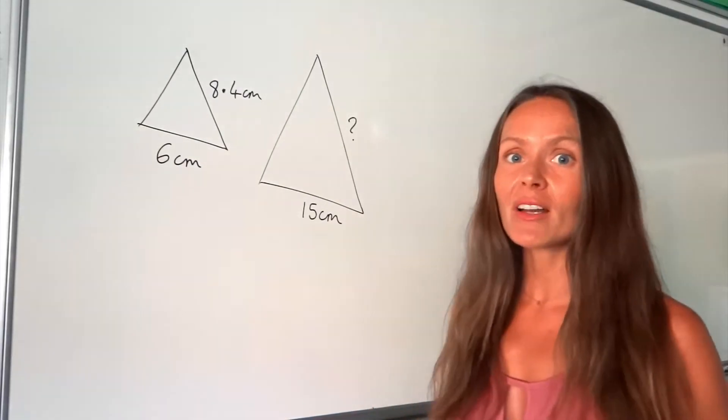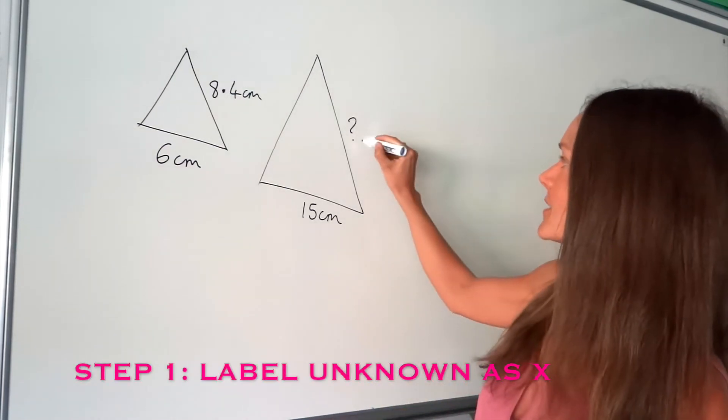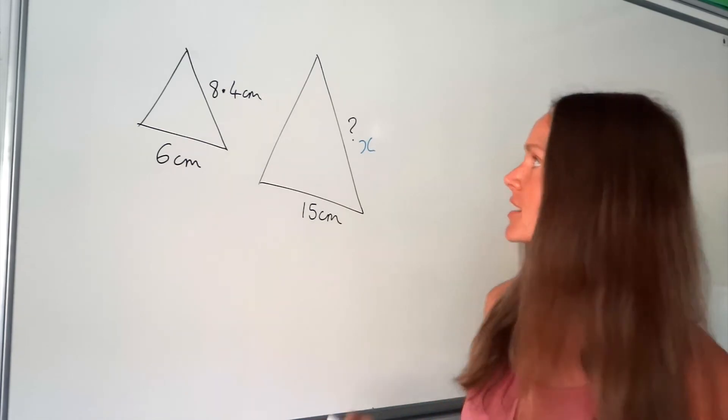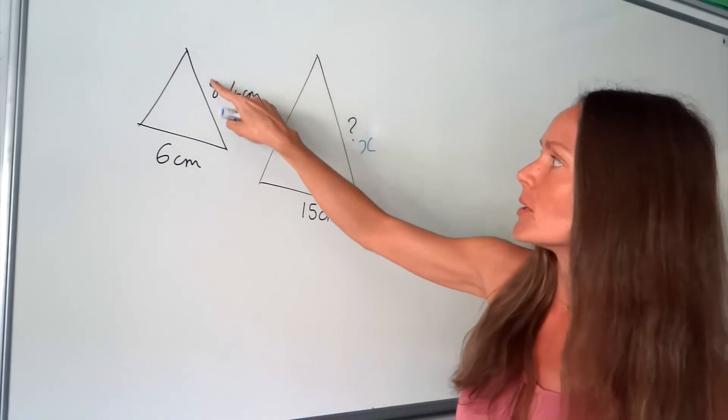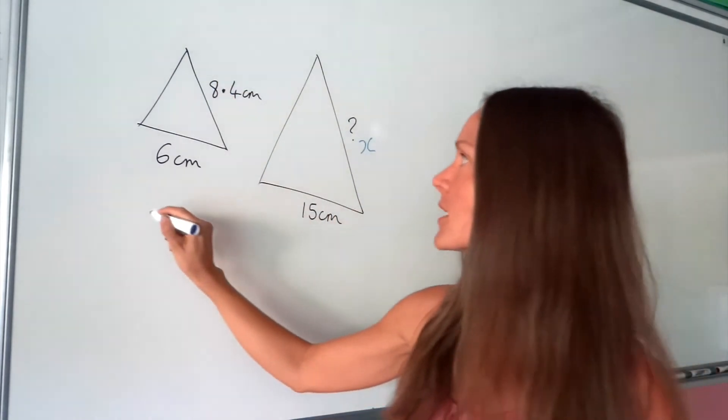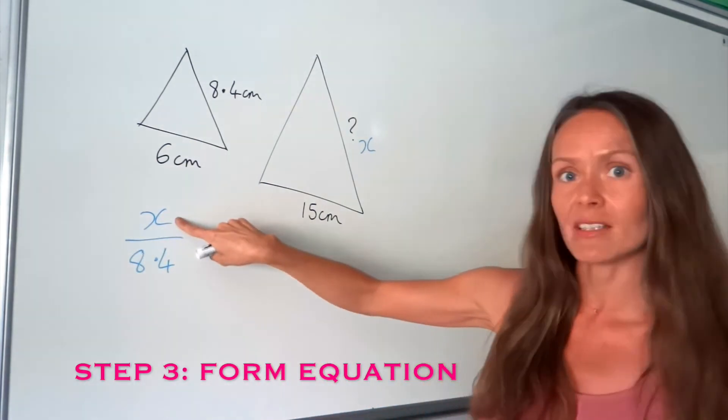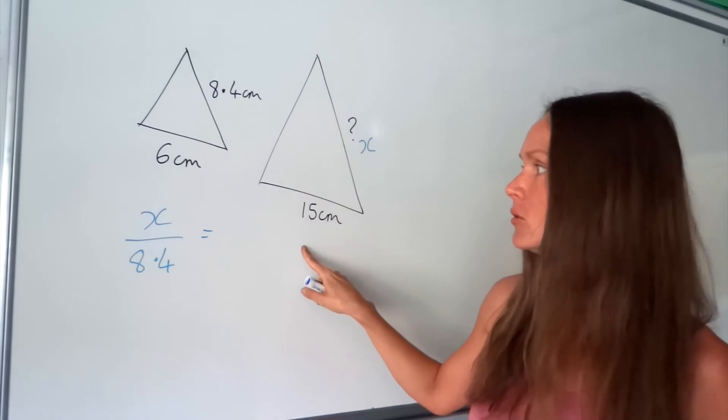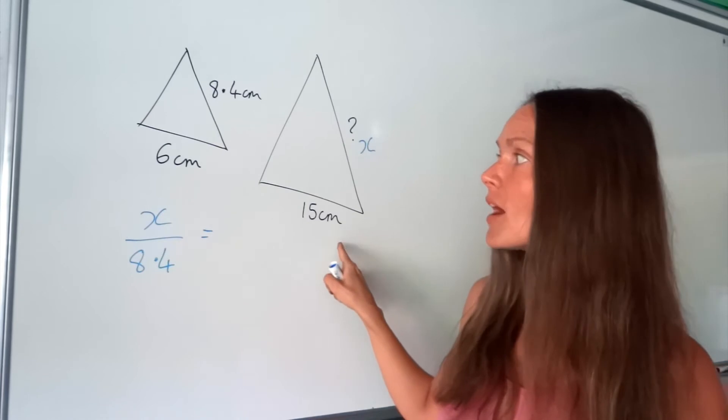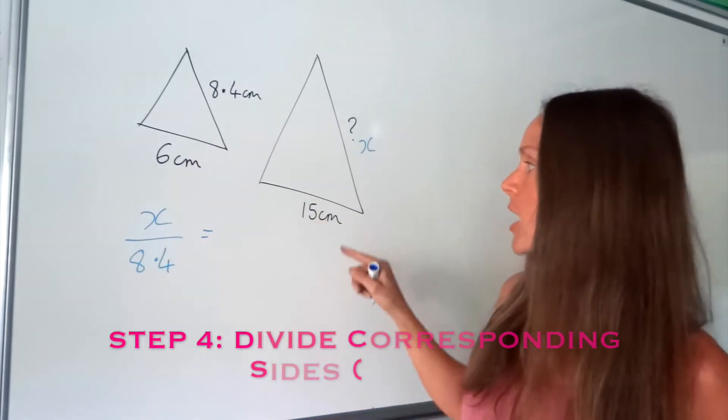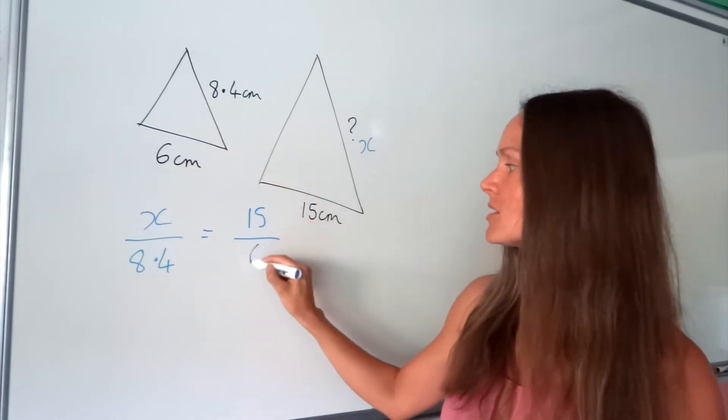In this second one I'm going to start the same way by labelling the side we need to work out with the letter x. And then I need to divide that large length by the corresponding small length. So if we look at the smaller triangle it must be this one here. So we're doing x divided by 8.4. So we've got x as the numerator again and this happens to be the large triangle. So we're doing the large side divided by the small side. So I need to divide the same way with this pair of sides. I'm doing the larger length which is 15 divided by the smaller one which is 6.